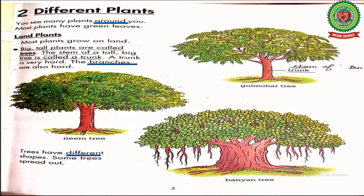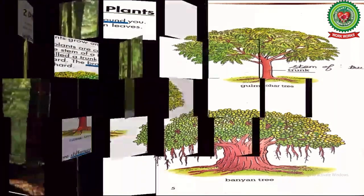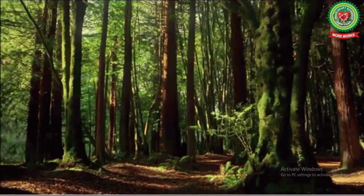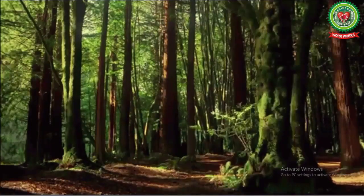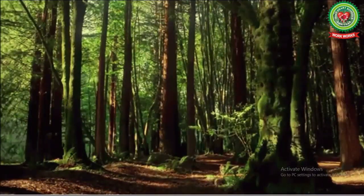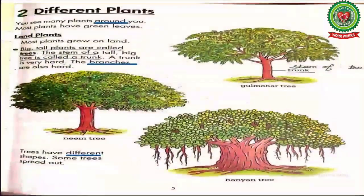Land plants: plants that grow on land are called land plants. Most plants grow on land. If you look at this picture in your book, you will find one similarity — all these plants are grown on land, so these plants are called land plants.